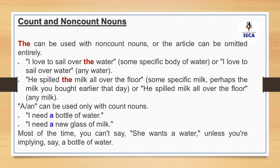A and AN, which we studied before, can be used only with count nouns — nouns that we can count. For example, 'I need a bottle of water' — you cannot count water but you can count a bottle, so we use 'a'. Similarly, 'I need a new glass of milk' — we are counting the glass, not the milk. Most of the time you can't say 'she wants a water' unless you imply 'a bottle of water'. If your noun is a count noun, use A or AN; otherwise, use 'the' or omit the article entirely.